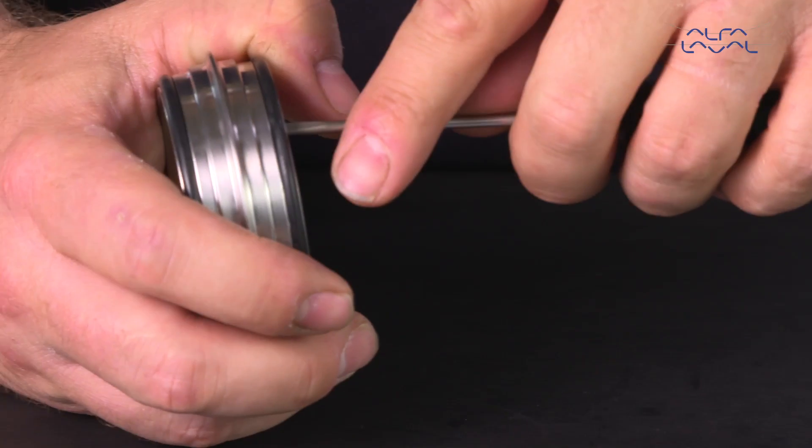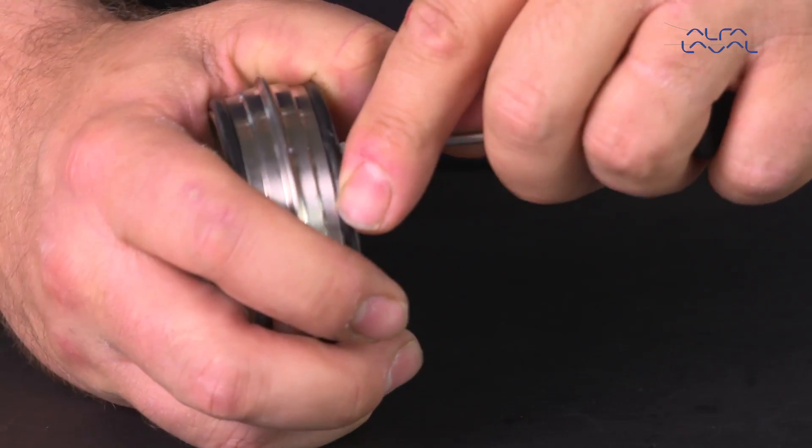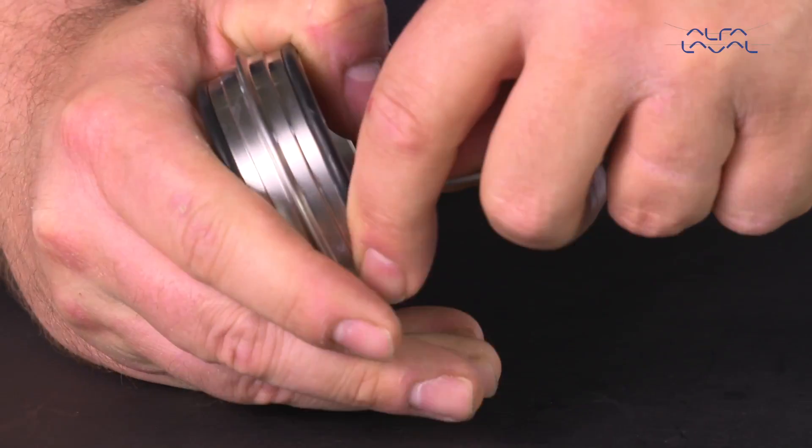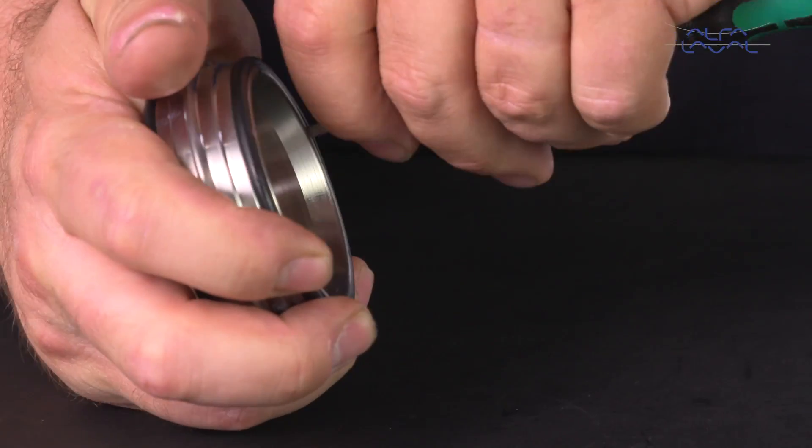Remember, carefully run a screwdriver 360 degrees along the backside of the o-rings to ensure that they did not twist or roll during installation.